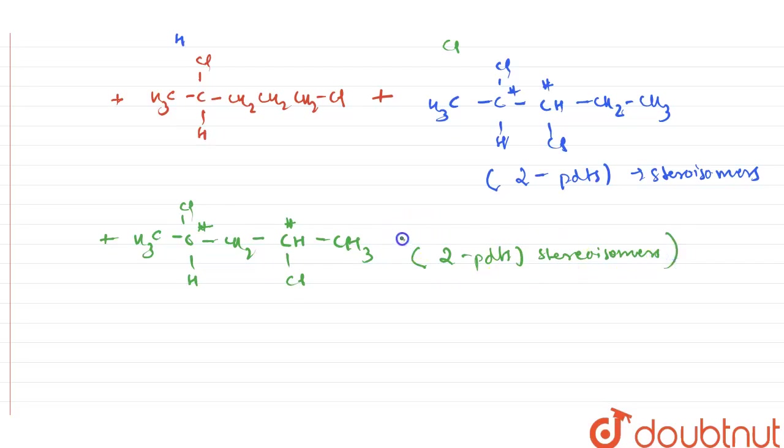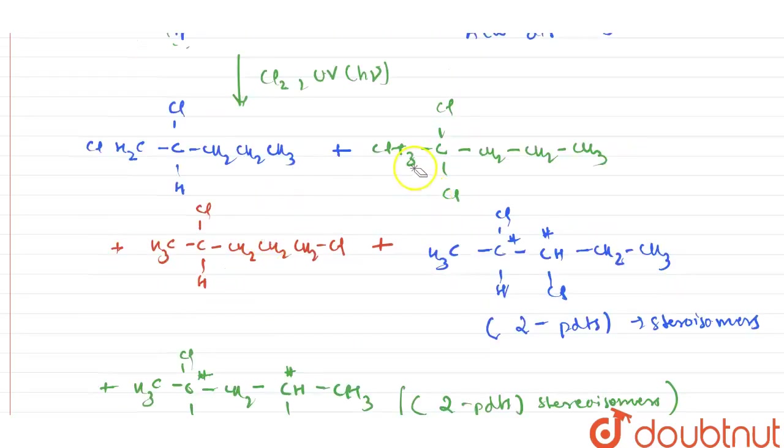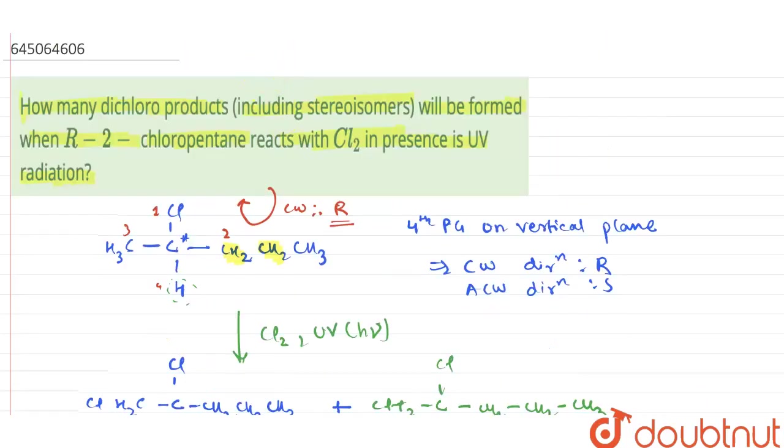Therefore, if we count total number of products, it would be two from here, two from here. Therefore, four, then we will have five, and six, and seven. So, therefore, the number of products possible will be total seven stereoisomers possible. Seven would be the answer. Thank you.